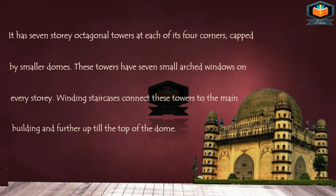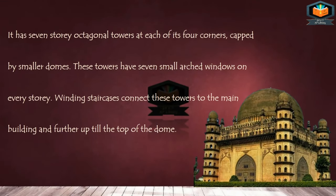It has seven-storey octagonal towers at each of its four corners, capped by smaller domes. These towers have seven small arched windows on every storey and connect to the main building all the way up to the top of the dome.